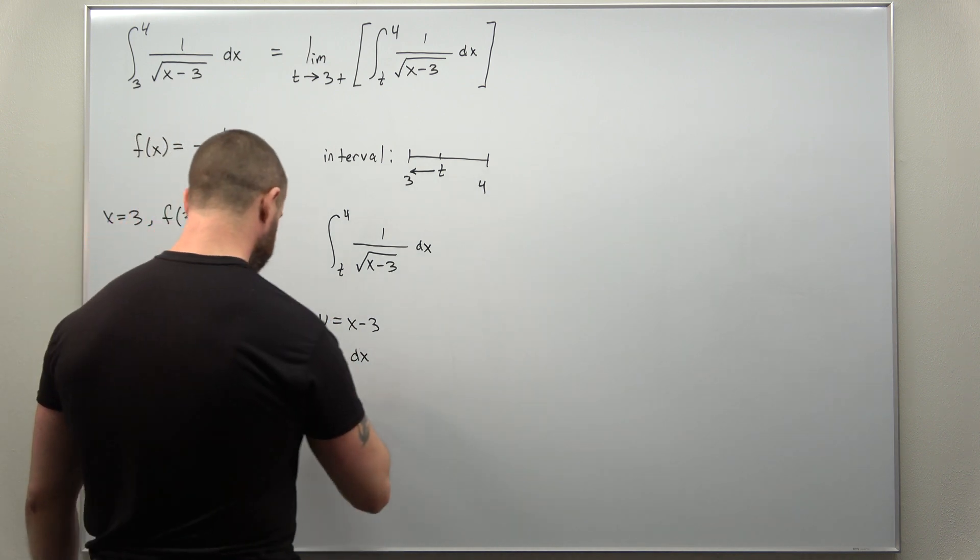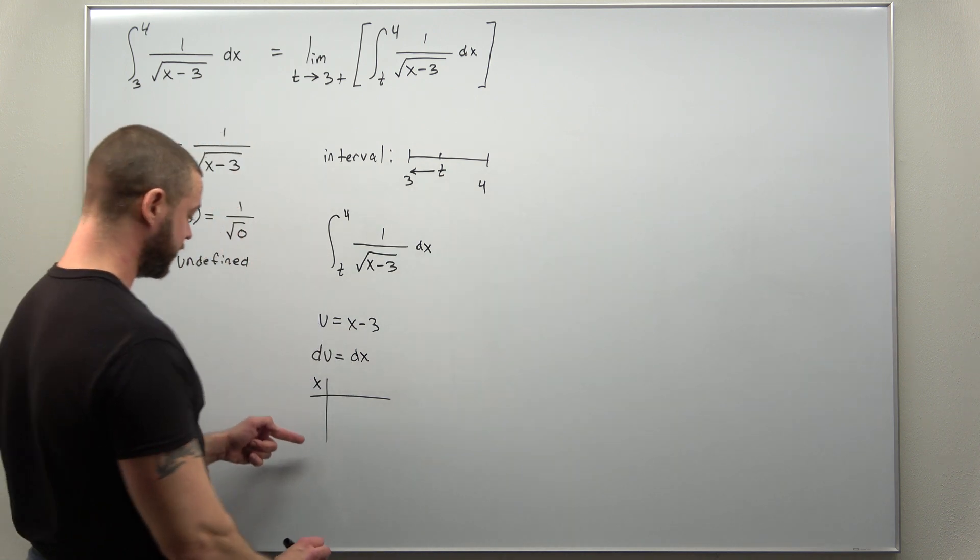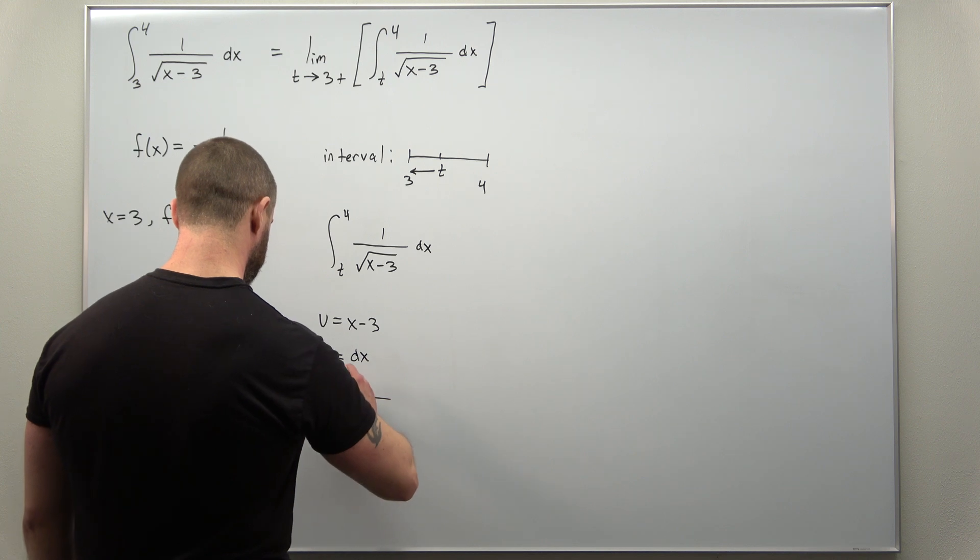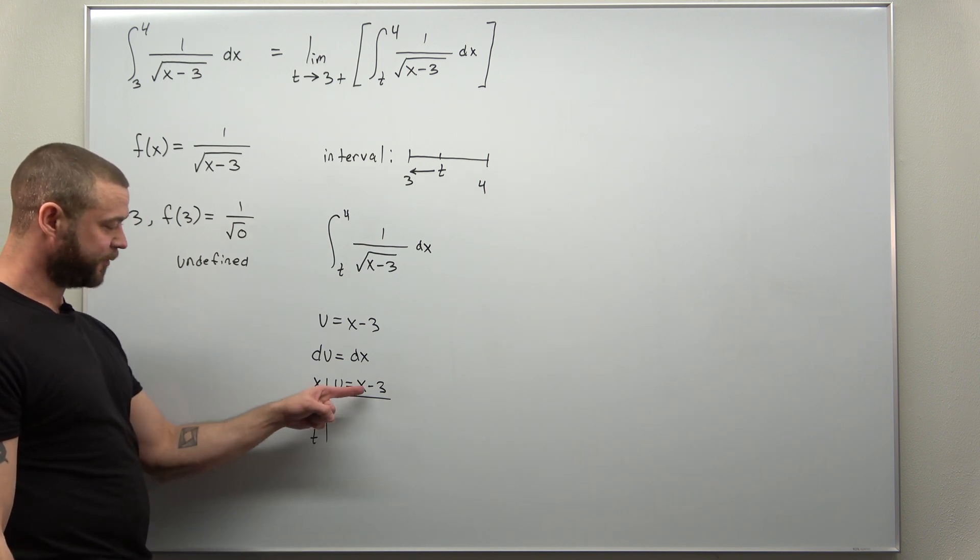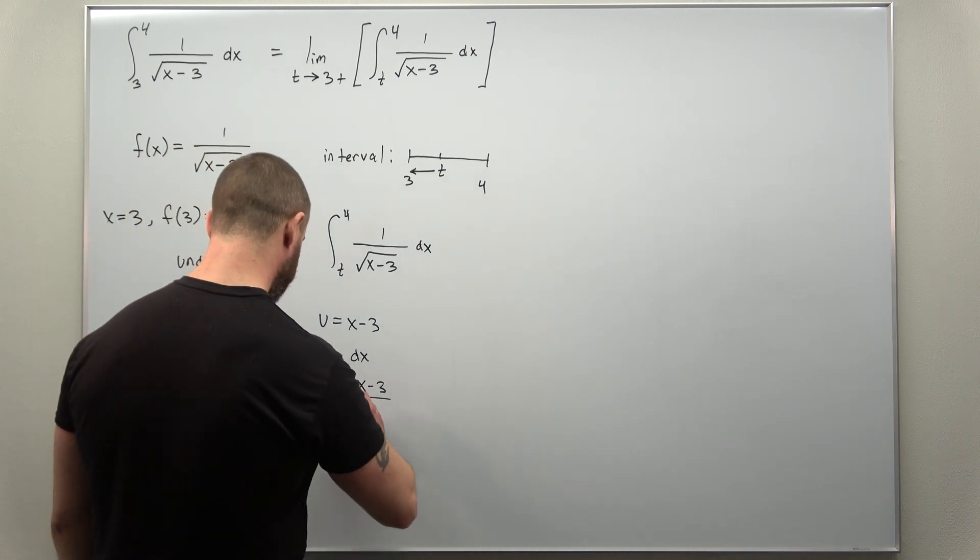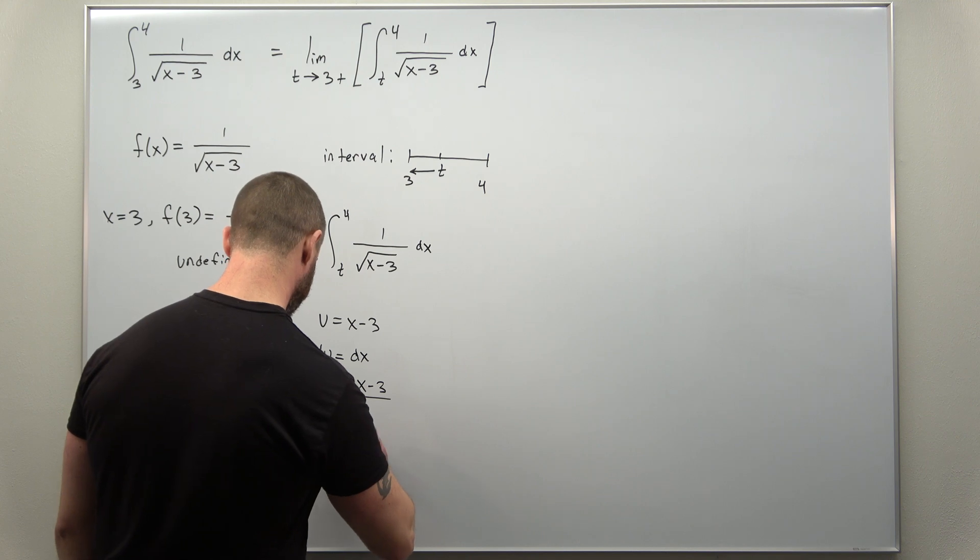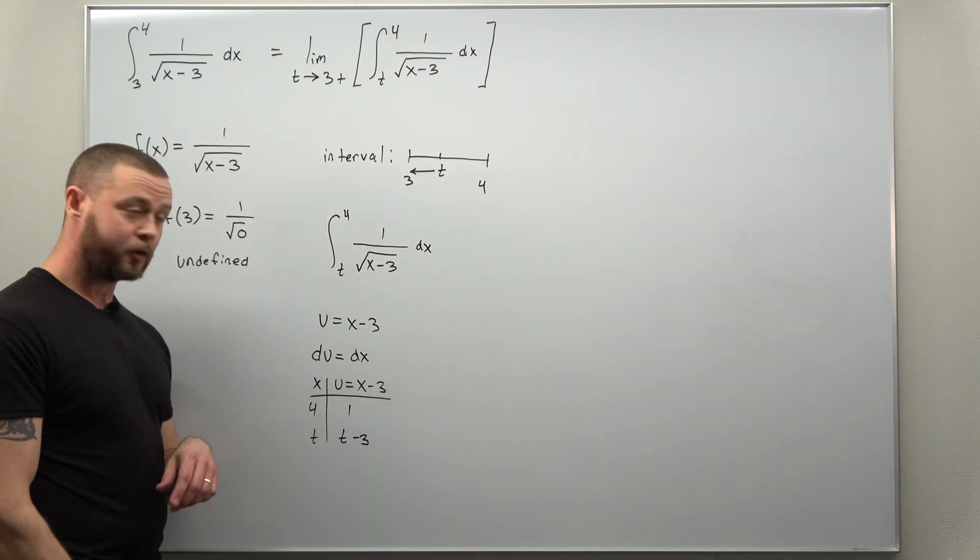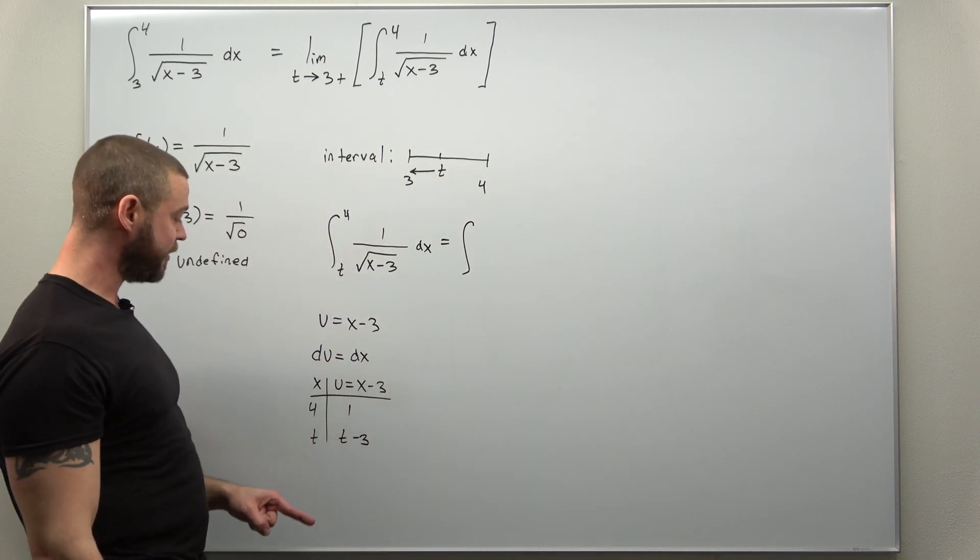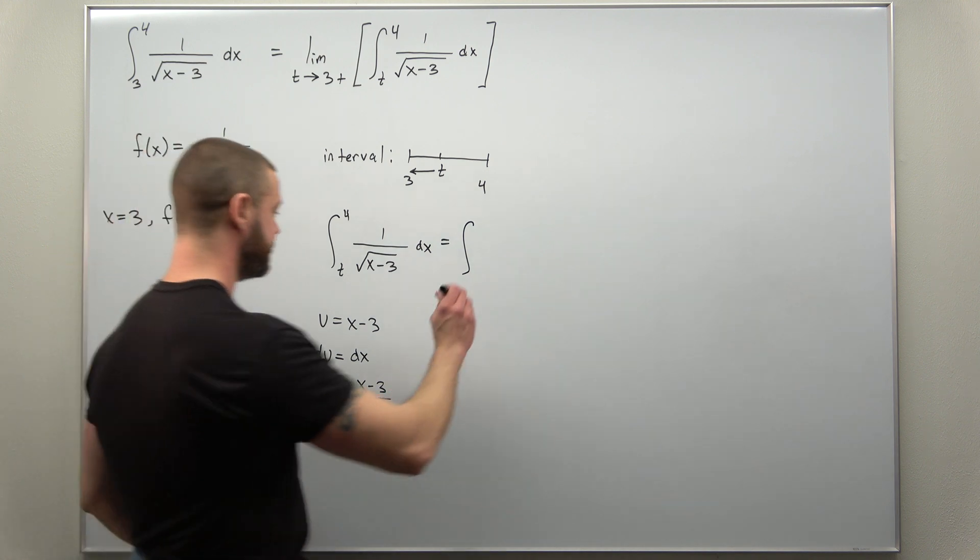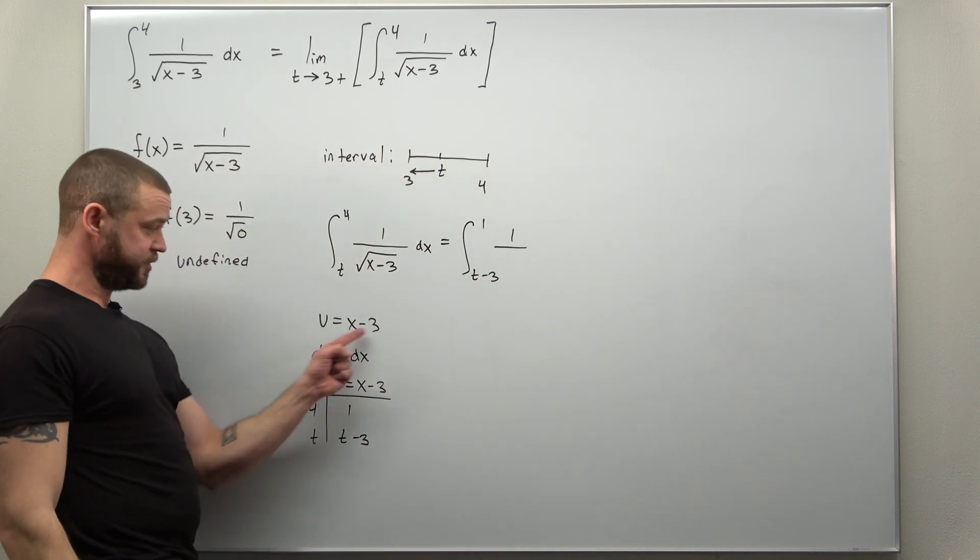We'll calculate du which is just dx, and I always like to change or convert the limits here when doing a u-substitution. So a simple conversion chart: our original variable is x, our limits are 4 and t, and we're converting now to u limits just by plugging in. If you plug in x as 4 you get u as 1, and if you plug in x as t you get u as t minus 3. We can now convert everything in our integral from x's to u's. We have now an integral going from t minus 3 to 1 of 1 over the square root of u du.